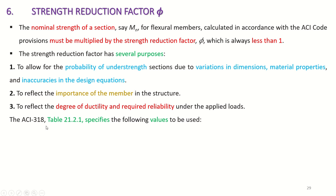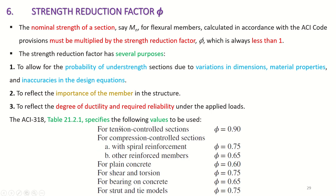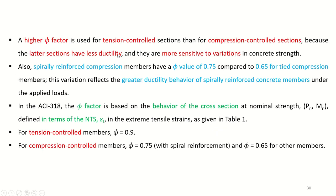ACI 318 Table 21.2 specifies the following values. For tension control, phi is 0.9. For compression controlled sections, for spiral columns it is 0.75 and for tied columns it is 0.65. You can see the difference because tension control gives a warning margin but compression control does not, so the reduction factor is greater for compression control. A higher factor is used for tension control — 0.9 — than for compression control — 0.65 — because compression control sections have less ductility and are more sensitive to variations in concrete strength.